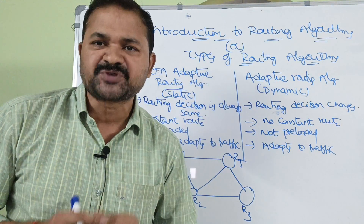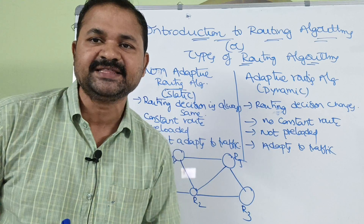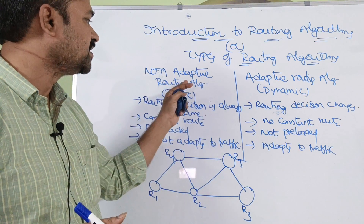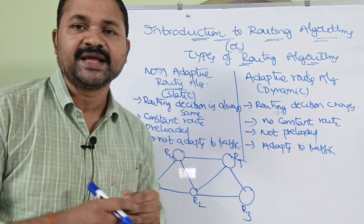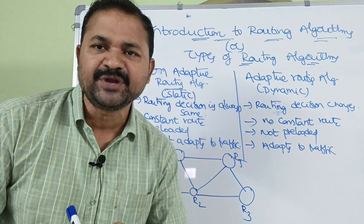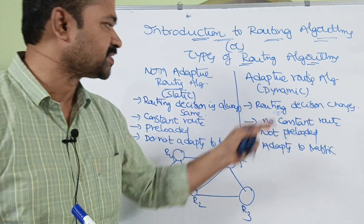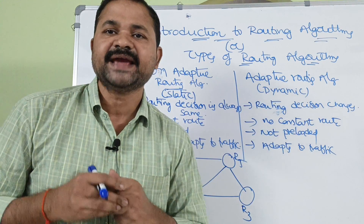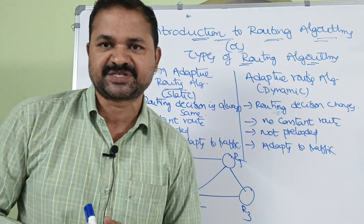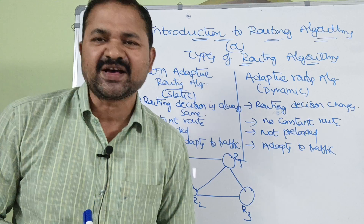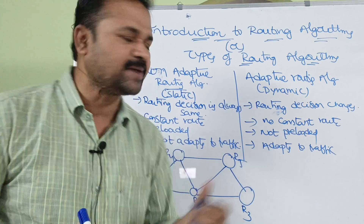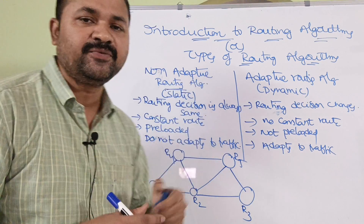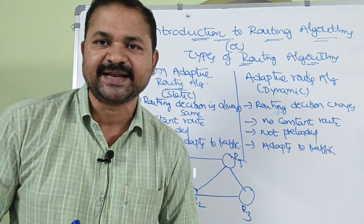Mainly we have two types of routing algorithms. The first one is the non-adaptive routing algorithm. The second one is the adaptive routing algorithm. So first, let us discuss about non-adaptive routing algorithms.